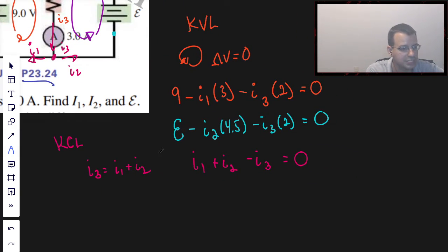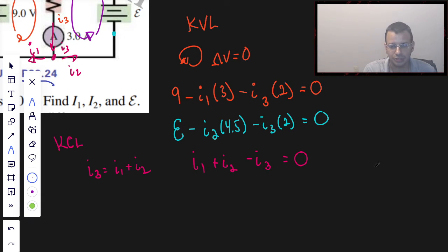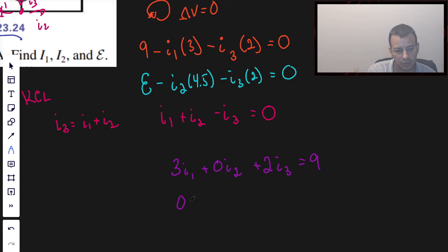All right, so now what I'm going to do is I'm going to write this in terms of a matrix. And so I'm going to do the first column, it's going to be I1, second column is going to be I2, third column is going to be I3. So rearranging this, this is going to be 3I1 plus 0I2 plus 2I3 equals 9.